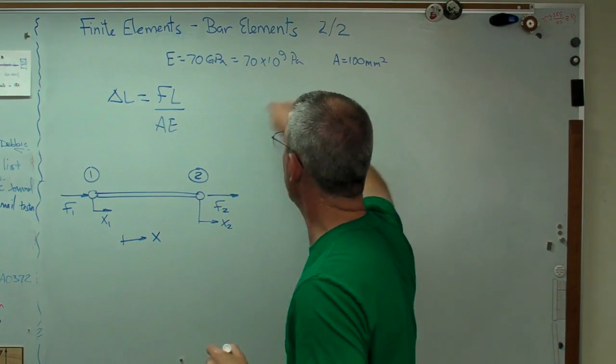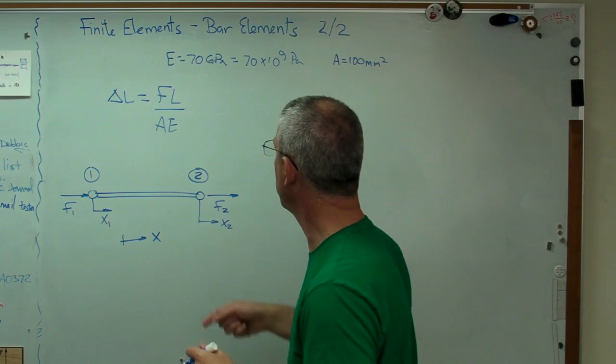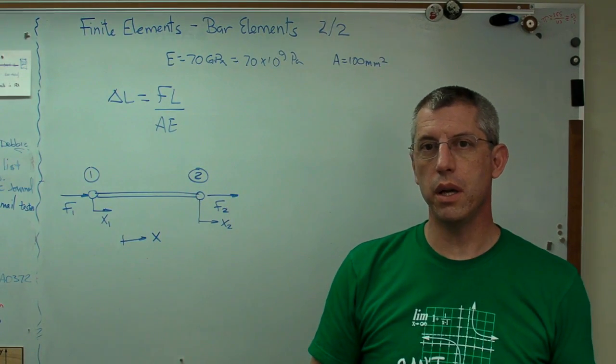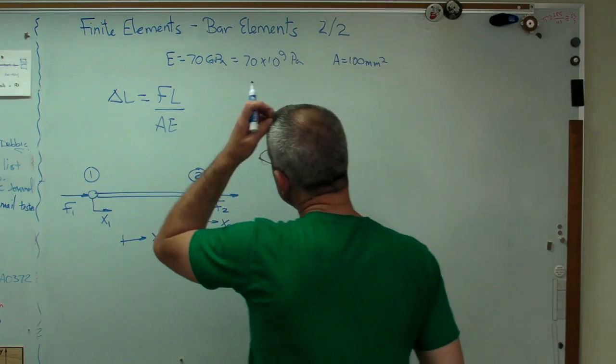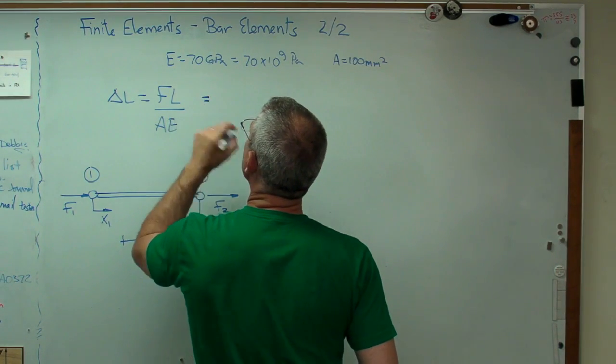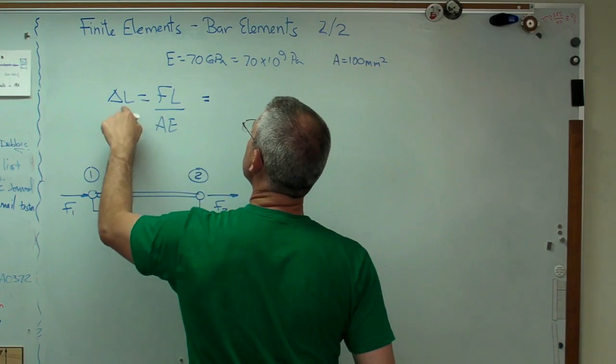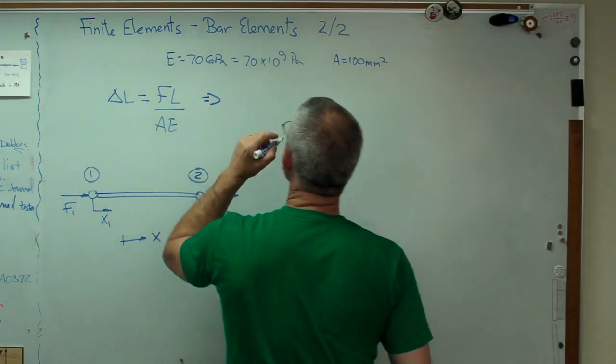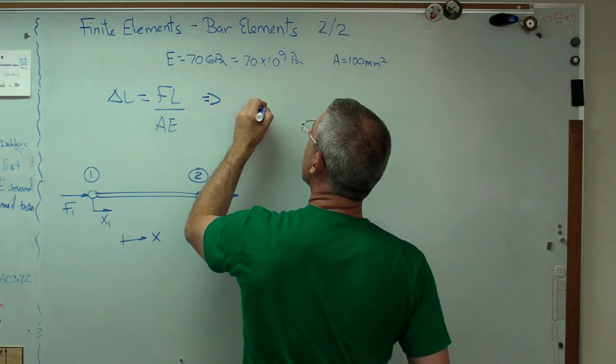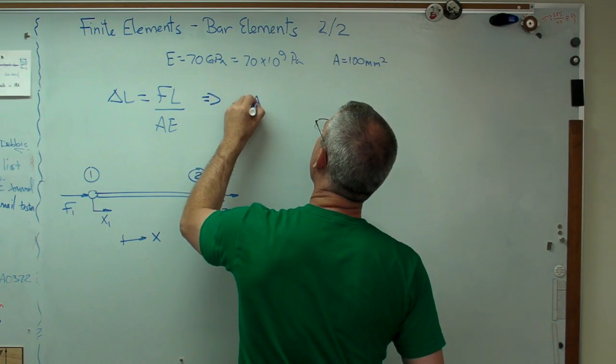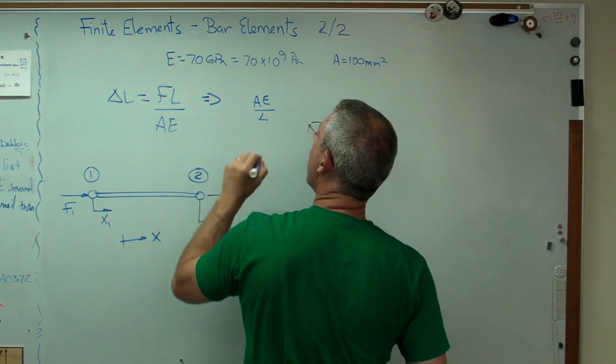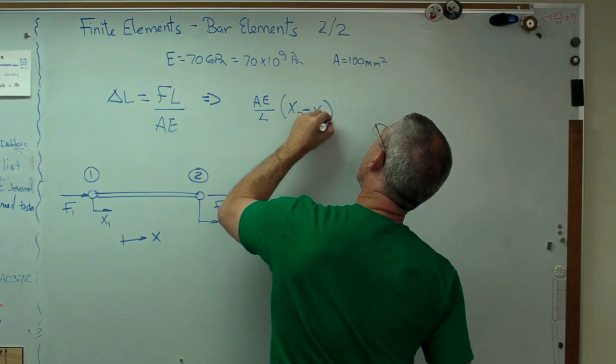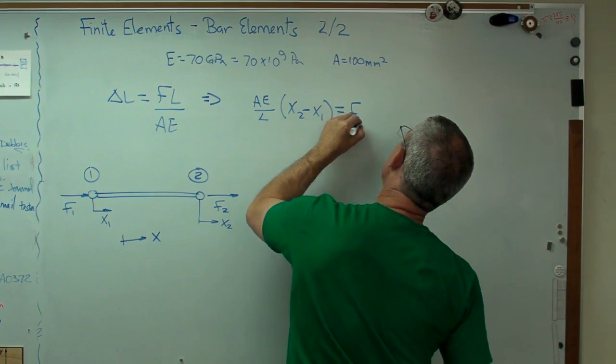Well, you might remember from strength of materials that change in length equals fl over ae. Where there's e, there's a, and we had l there a second ago. I just erased it. This looks pretty good. That's almost a relationship between force and displacement. If I say that delta l is change in length, that's going to be one displacement minus another one. If I say ae over l, I'm going to push those two over there, x2 minus x1 equals f2.